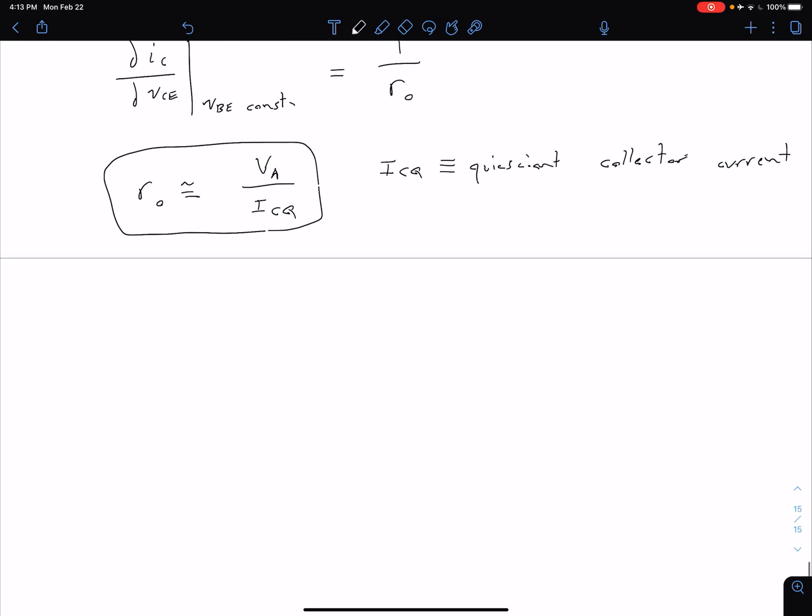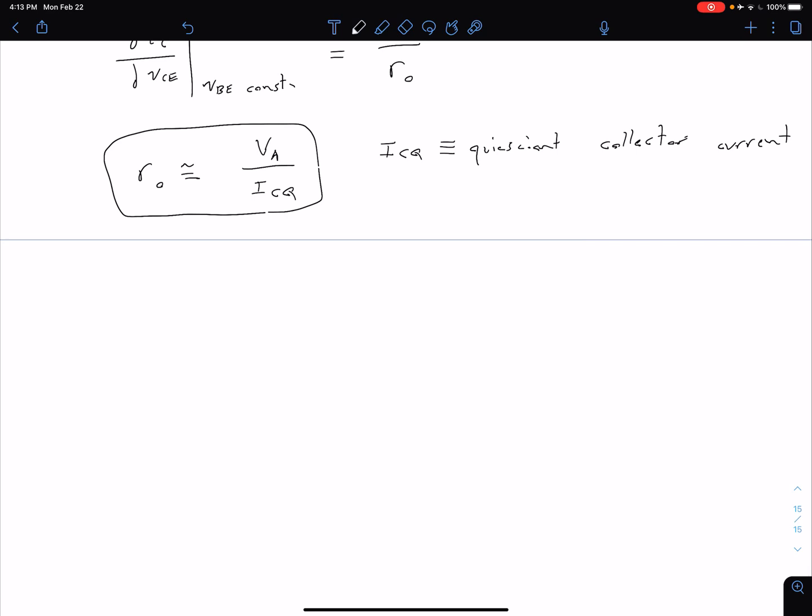There are a couple other non-ideal effects that we're not going to mention in the videos or not covering the videos rather, but I do want to mention at least in passing. The first one is leakage currents. So of course we have various types of leakage currents in this device that we've sort of neglected as a first order approximation.